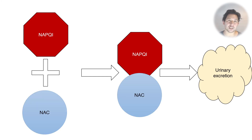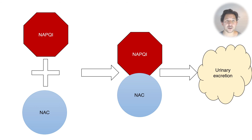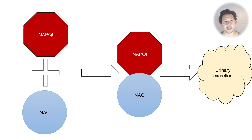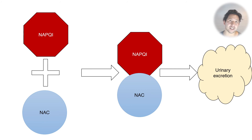NAC essentially works as a substitute for glutathione. This explanation and diagram is a gross oversimplification of what actually happens. What actually happens is NAC is a precursor to glutathione, and also can enhance the metabolism of paracetamol through sulfation, and finally has some other properties such as being an antioxidant and anti-inflammatory.